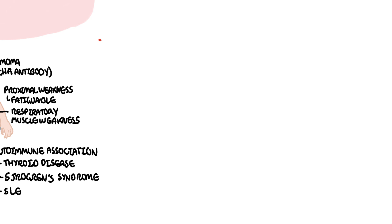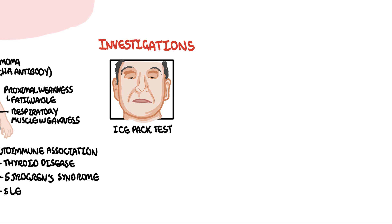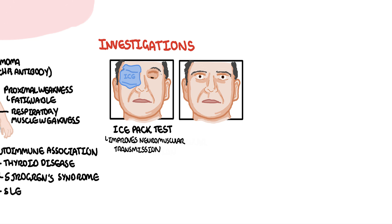When someone has suspected myasthenia gravis, there is the ice pack test, based on the physiological principle that neuromuscular transmission improves at lower muscle temperatures — placing ice over the eye for five minutes improves ptosis temporarily. There is also the edrophonium test, also known as the Tensilon test, which was used to diagnose myasthenia gravis before AChR antibody testing became common. Edrophonium is a short-acting acetylcholinesterase inhibitor, so symptoms improve rapidly after its administration.